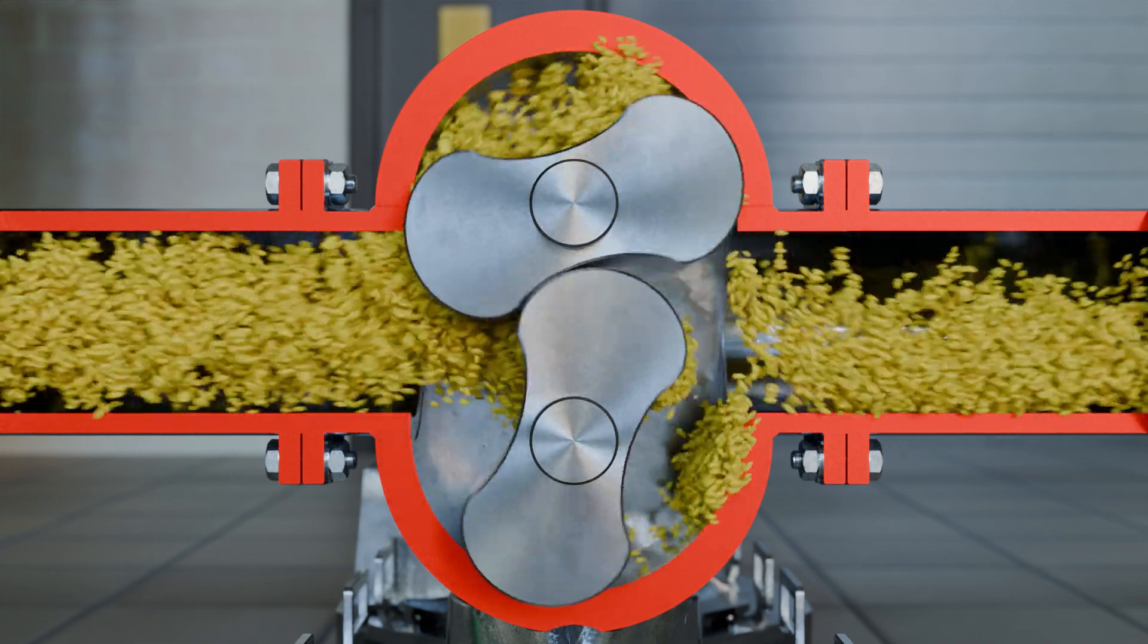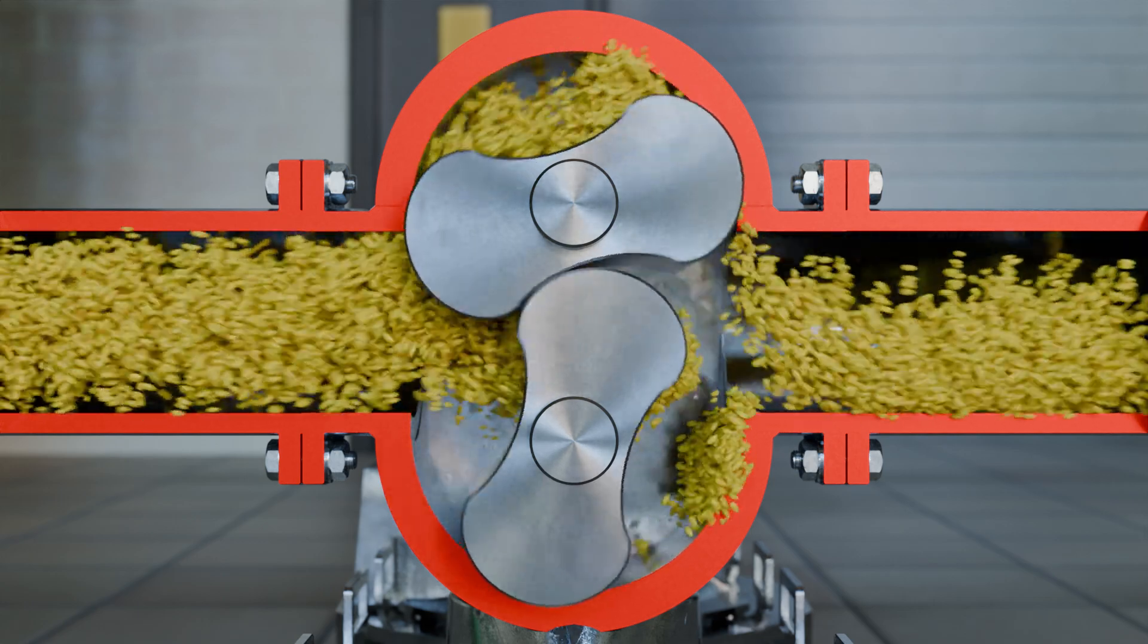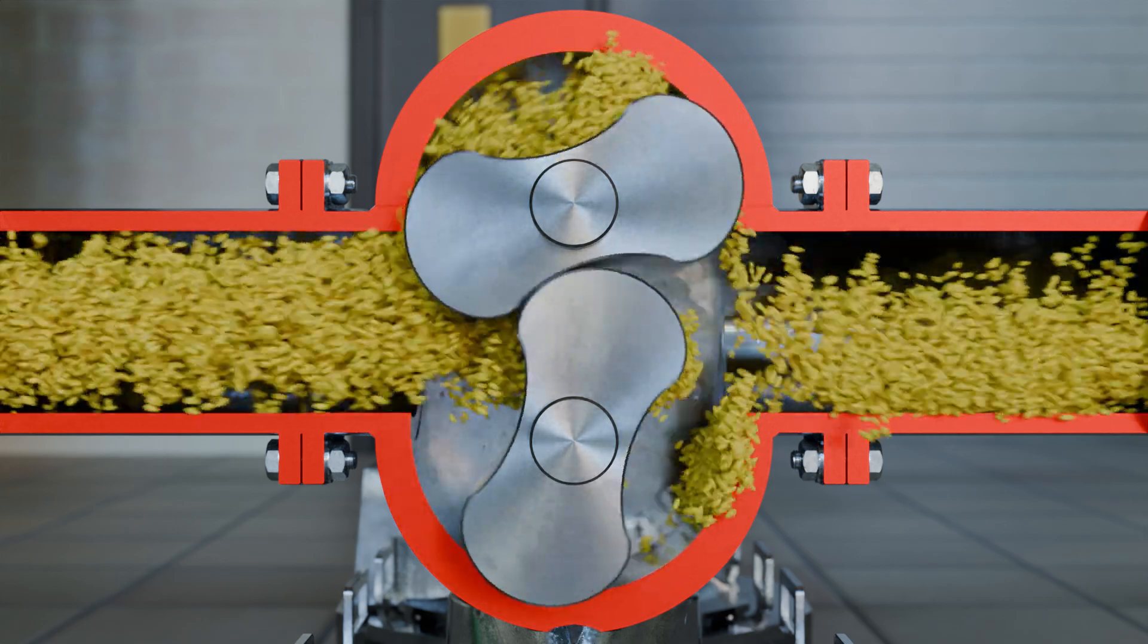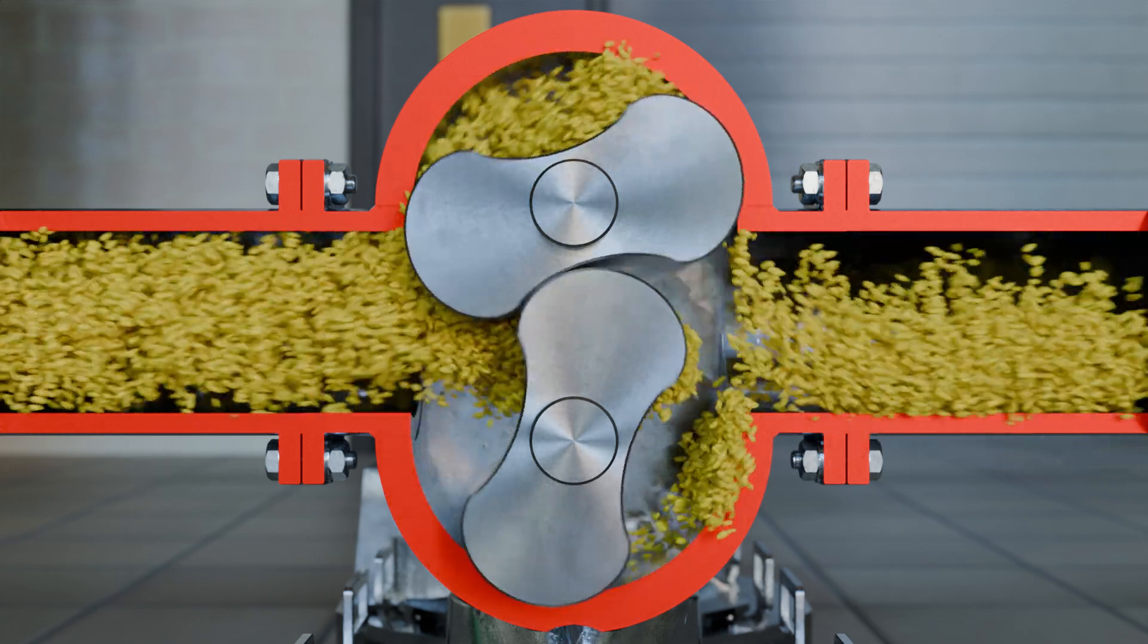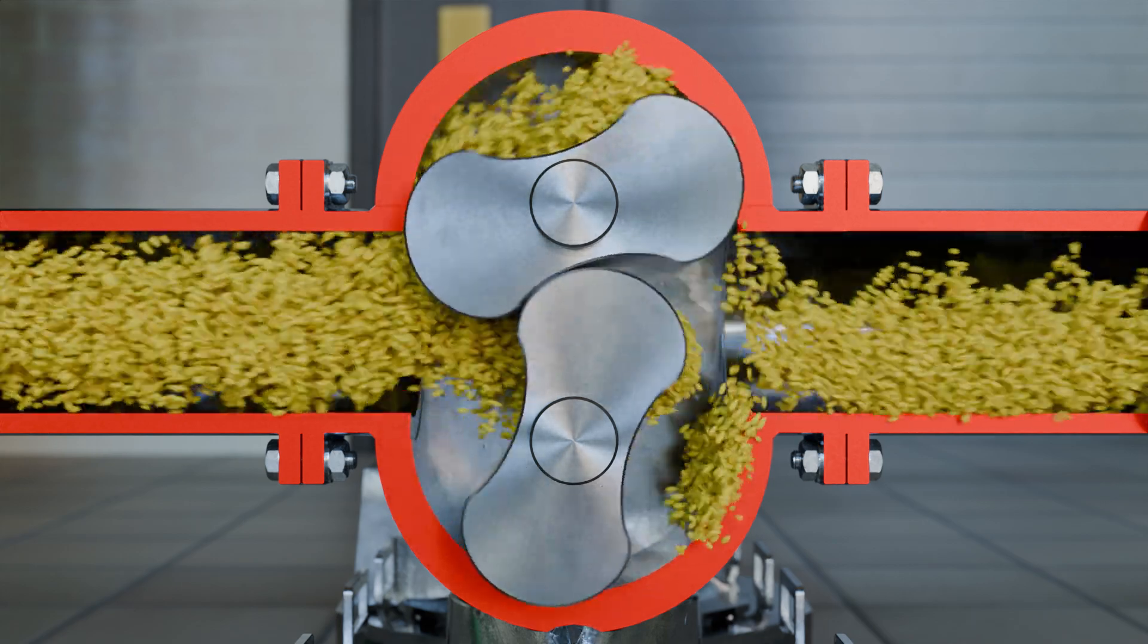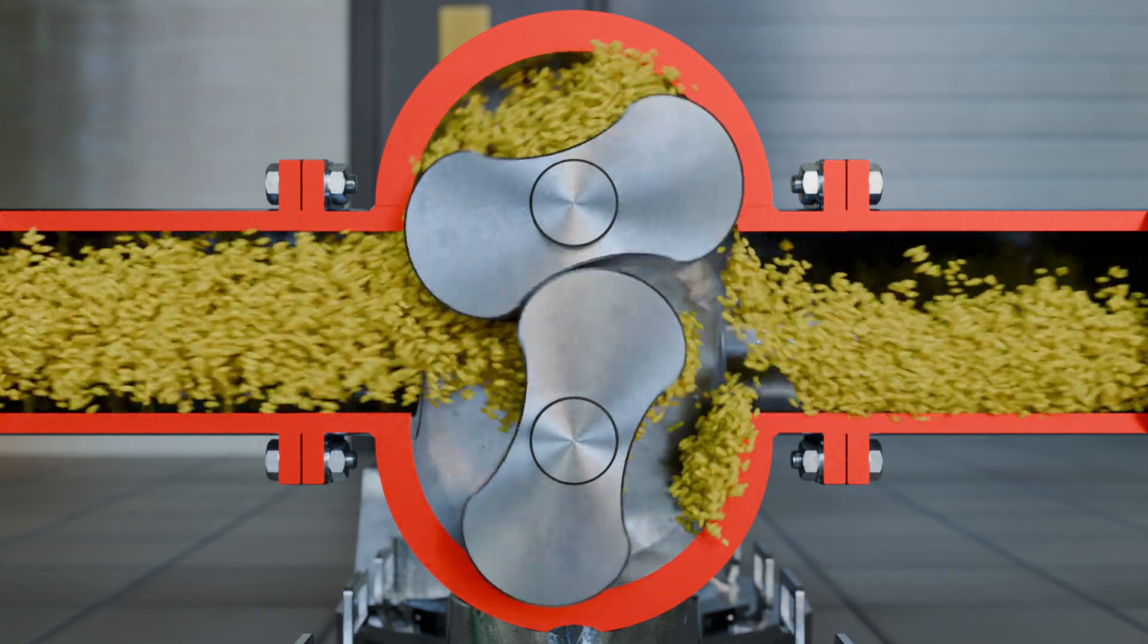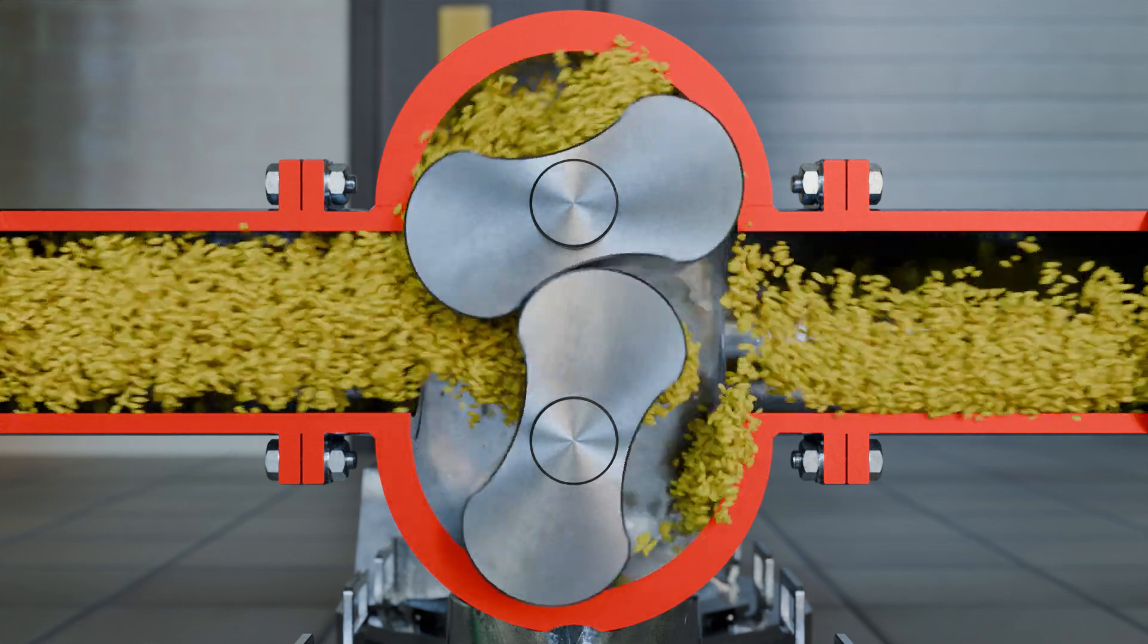Lobe pumps are used in applications where a continuous flow of air or gas is required. Typical applications include aeration systems in sewage and water treatment plants, where air is pumped into the wastewater to aid biological decomposition. In the food industry, rotary lobe pumps can be used to move food products such as grain, rice, or chocolate.